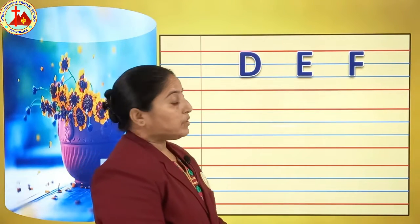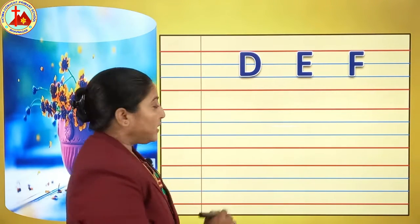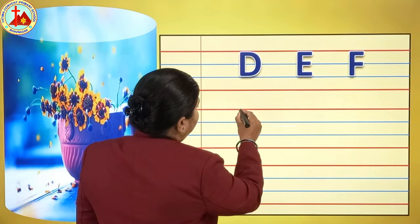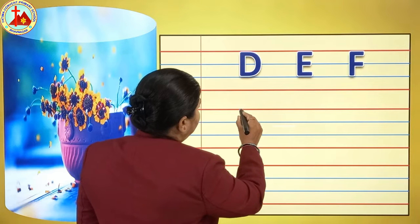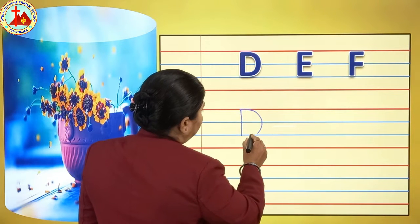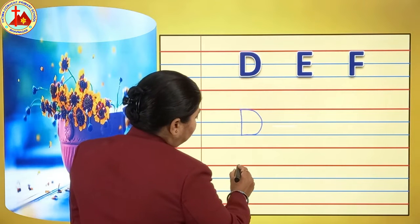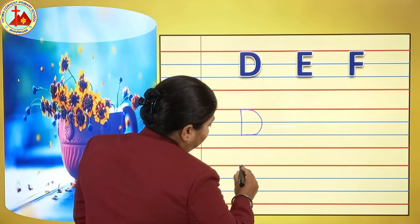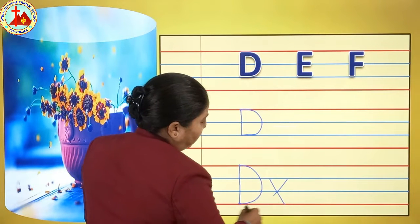Now after C, which letter comes? Letter D. So let's write letter D — from the red line to the second blue line. Standing line and semicircle. That is letter D. You have to follow the line — you cannot write D like this. This is the wrong one.